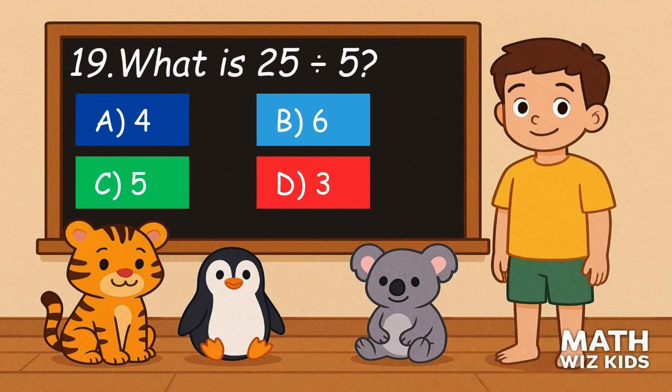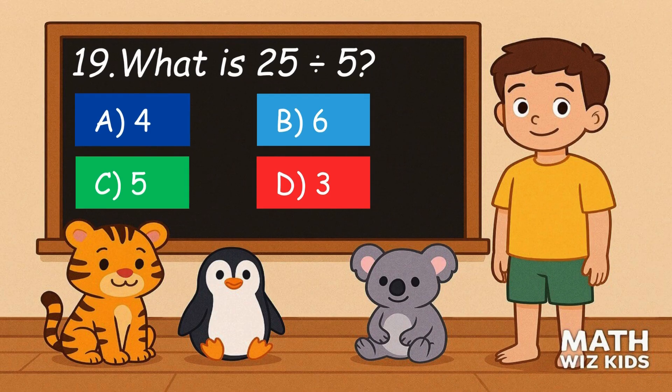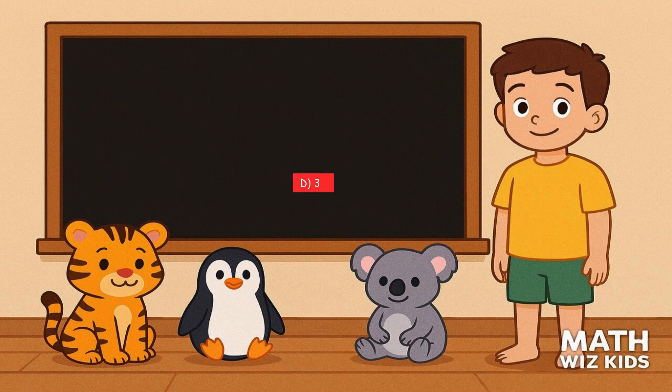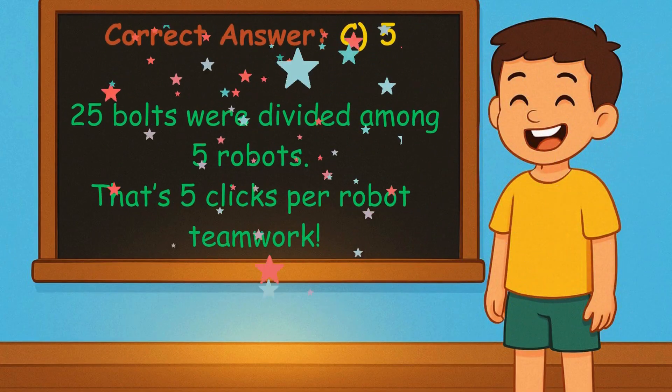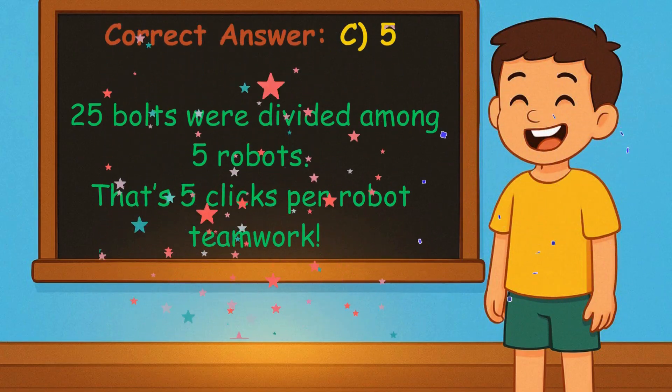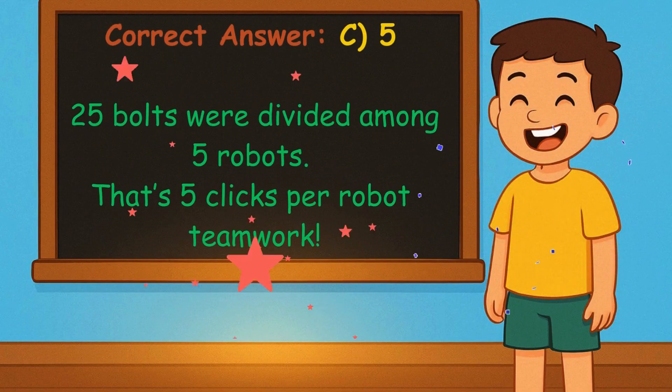19. What is 25 divided by 5? Is it A, 4, B, 6, C, 5, or D, 3? Correct answer is 5. 25 bolts were divided among 5 robots. That's 5 clicks per robot. Teamwork.